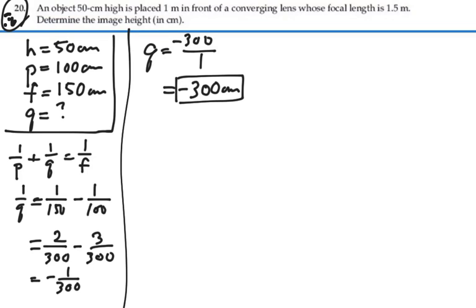Hence, our magnification, which is negative Q over P, will be negative negative 300 over 100, which would be 3. That's our magnification.